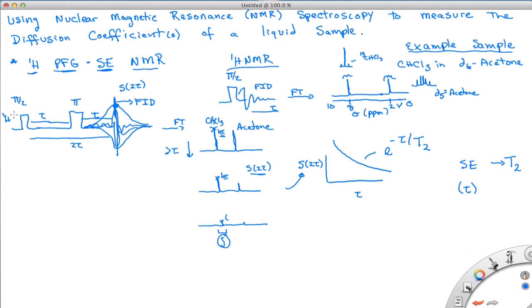So now, if this is the proton channel here, we can have a gradient channel, and on that channel, we can pulse a gradient, and we typically do it right after these RF pulses.